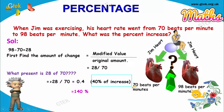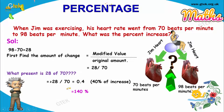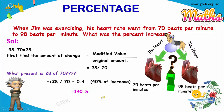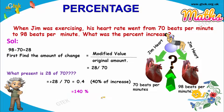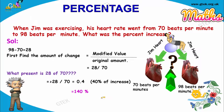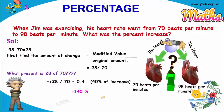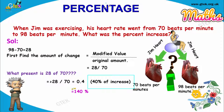So the percentage increase in heartbeat is 40%. The overall value is 140%. This is how we calculate it. The percentage of increase is 40% and the overall percentage is 140%.